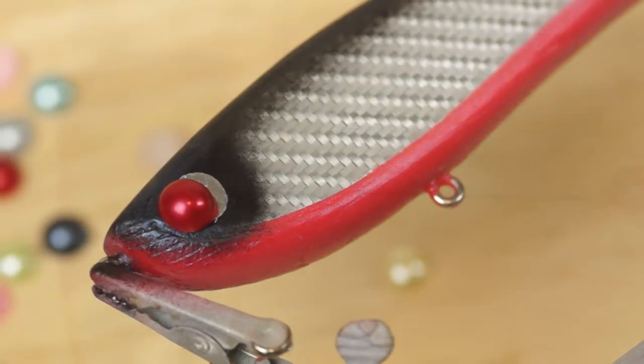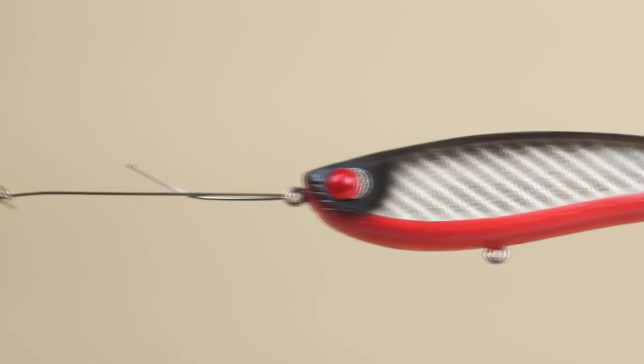To prep for the clear coat I've set up a simple disco ball motor with some wire and a swivel to keep the body rotating while I work.